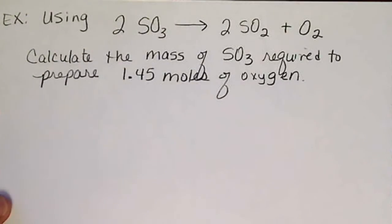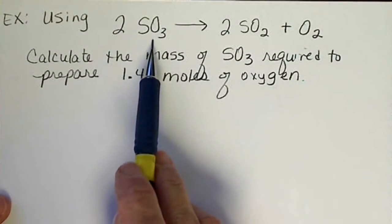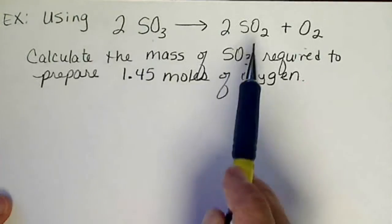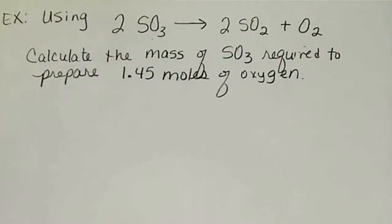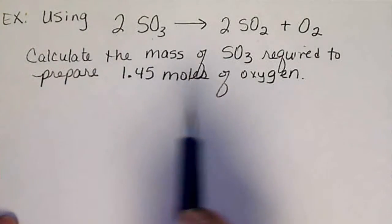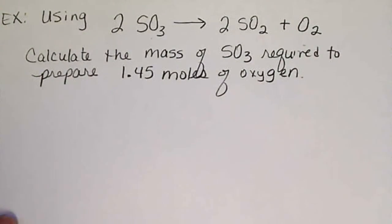Using this balanced equation for the decomposition of sulfur trioxide into sulfur dioxide and oxygen, I'm going to calculate the mass of SO3 required to prepare 1.45 moles of oxygen.